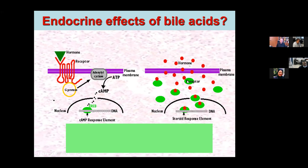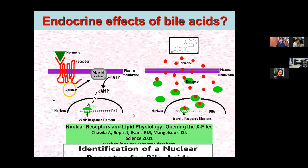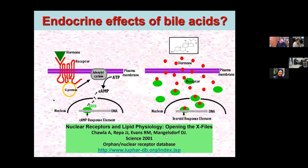Bile acids act by binding to specific receptors. The group of David Mangelsdorf was able to identify the specific nuclear receptor for bile acids, now known as FXR — farnesoid X receptor. Mangelsdorf also published a great paper in Science in 2001 with the title 'Opening the X Files of Nuclear Receptors for Lipid Physiology,' because we have many so-called orphan receptors whose ligands are unknown. FXR was one of them, and they were able to identify bile acids as its ligands.